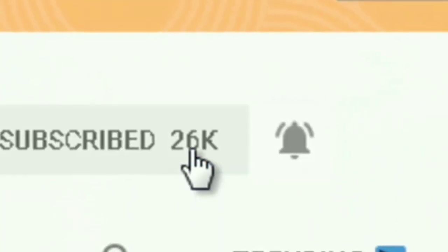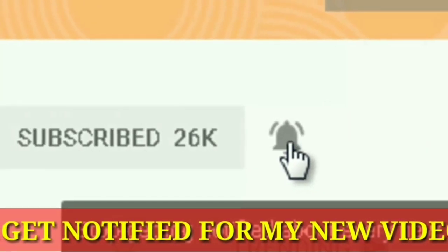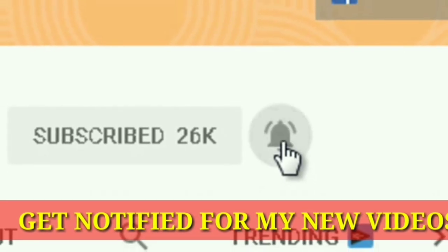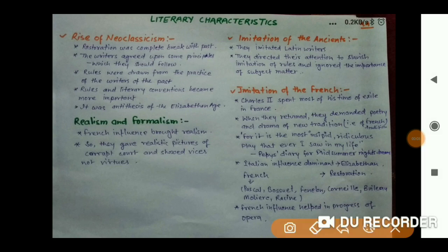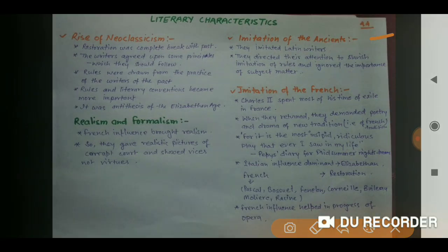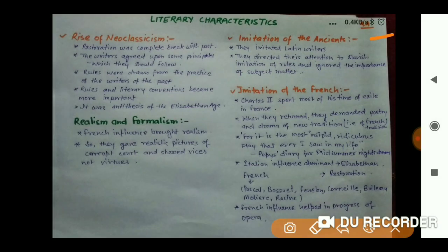Hello guys, if you like my channel please don't forget to subscribe and hit the bell icon so that you can get notified for my videos. Hello everyone, you are most welcome again on my channel. Today is Day 44 and we are doing history of English literature — this is the Restoration Age of Dryden. We will be talking about the literary characteristics of this age.